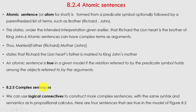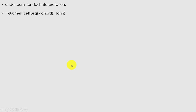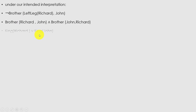We can use logical connectives to construct more complex sentences with the same syntax and semantics as in propositional calculus. Here are four sentences that are true in the model of figure 8.2 under the intended interpretation: ¬Brother(LeftLeg(Richard), John); Brother(Richard, John) ∧ Brother(John, Richard).